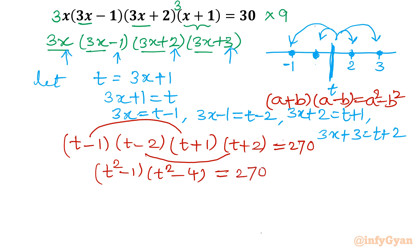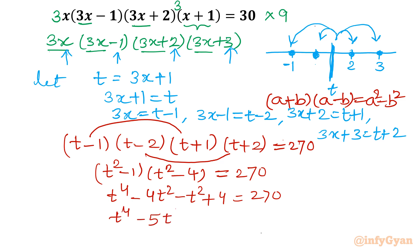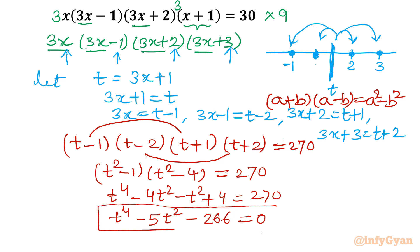If I expand this, I will have t⁴ minus 4t² minus t² plus 4 equal to 270. Taking all terms to the left: t⁴ minus 5t² minus 266 equal to 0. This is our quadratic equation — or I can say it is quadratic in t².